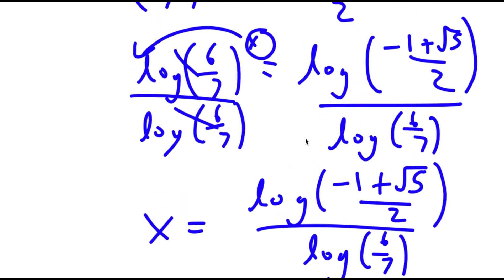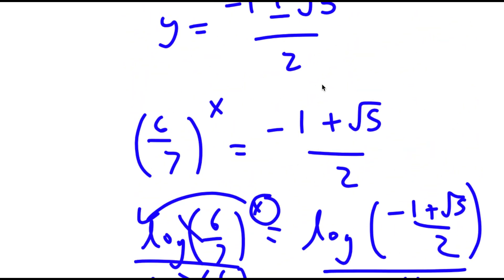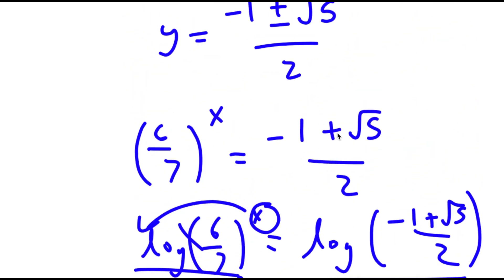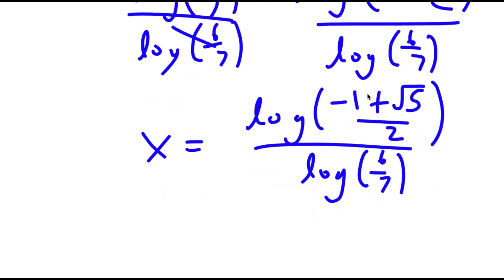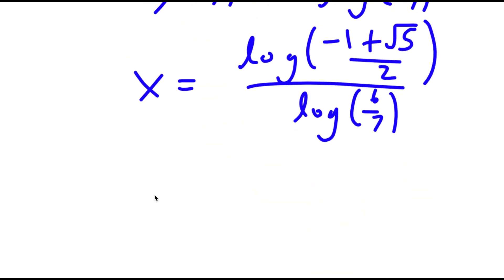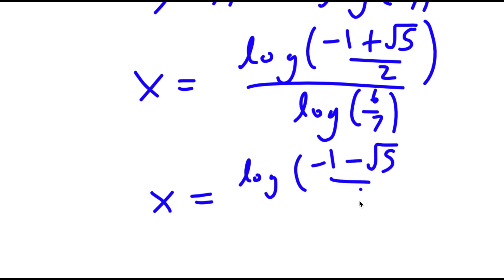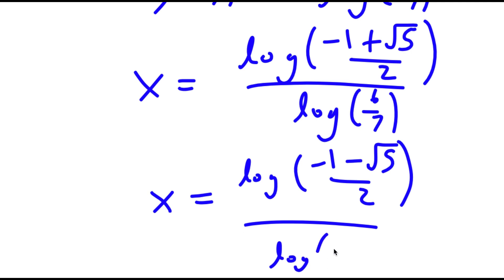We can also do the same thing with negative 1 minus the square root of 5, giving the same process but with a minus sign. So I also have x is equal to log of (negative 1 minus the square root of 5 over 2) over log of 6 over 7.